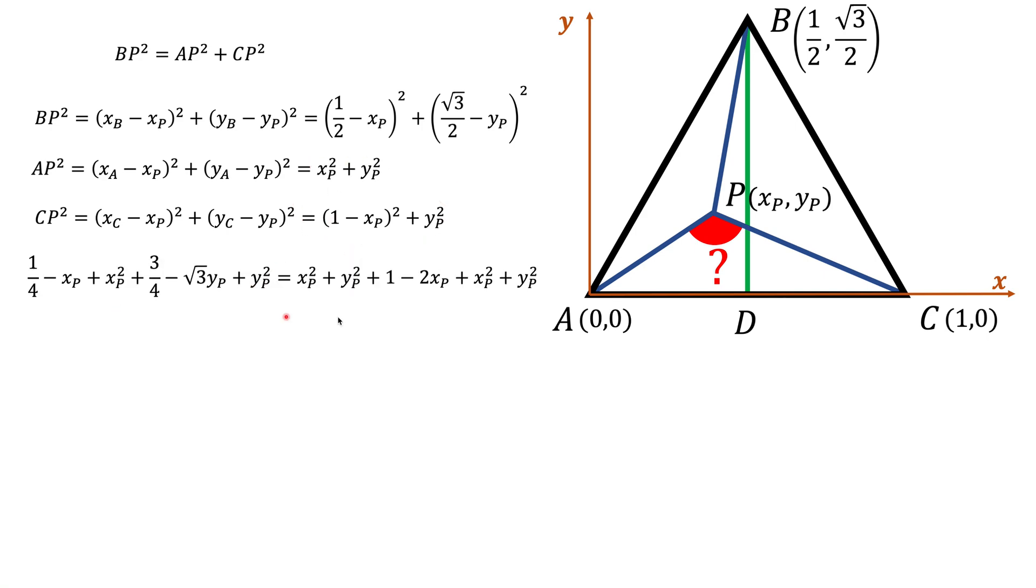So now we just want to equate this line to the sum of these two, and this is what we're going to get. Now here what I did, I also opened up all these parentheses. What you have on the left is actually BP squared, it's this thing. What you have on the right, these two terms is AP squared. The rest of it, these four terms, is CP squared.